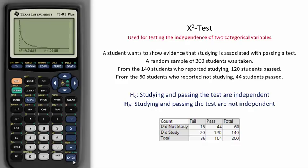Our Chi-squared test statistic is 4.3619 and gives us a p-value of 0.0368. In this instance, we can reject the null and say that there is evidence that studying and passing the test are not independent.